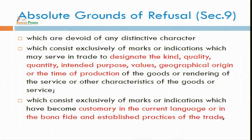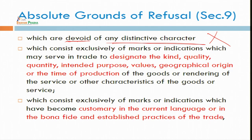Before going to the registration process, there are some grounds under Section 9 which tell you whether a particular mark should be registered or will be debarred. There are absolute grounds of refusal — restrictions on marks or certain words not covered under this Trademark Act. First, if some mark is devoid of distinctive character — if it does not distinguish the goods and services of one person — then that will be barred by Section 9.